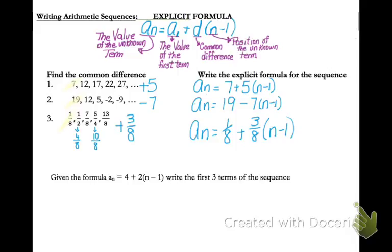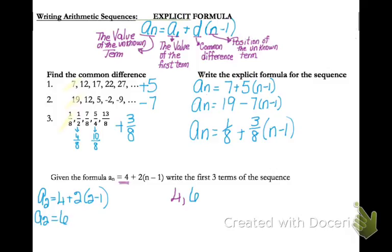Next, given a formula, I'm going to ask you to find one or more terms in the sequence. On this particular one, find the first three terms. The first term has to be 4 because that's a sub 1 in my formula. To find the second term, I replace n with 2 in my formula and get 6. Or I could use my rate of change, which is plus 2, to find subsequent terms.